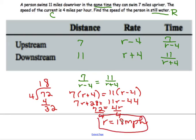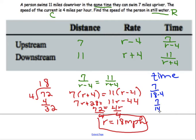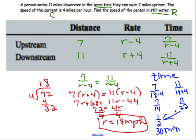You can also find the time. If you know the rate, plug 18 back into the top equation: 7 over (18 minus 4) equals 7 over 14, which is one half. So that's 30 minutes, or half an hour. And on the other equation: 11 over (18 plus 4) equals 11 over 22, which is also one half. So I might ask you to find the time it takes.